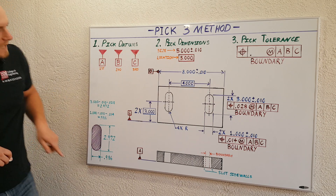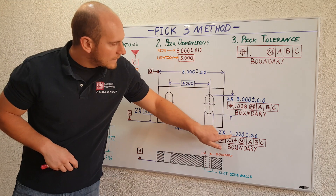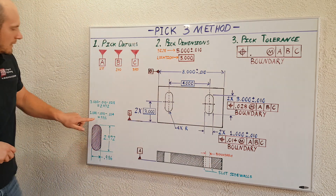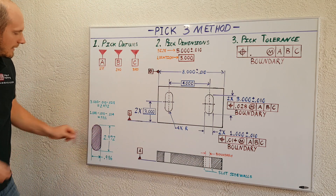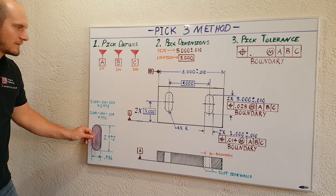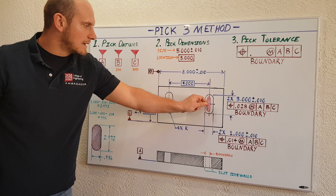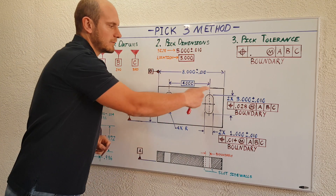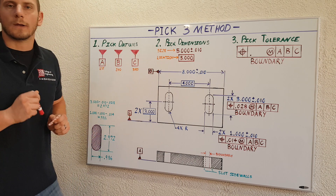Do the same thing for your overall width: 1 inch, minus 10 thousandths, minus 14 thousandths, which gets you 0.986. And that's the size of that internal boundary area that cannot be violated when that slot is being machined. And that's straight to the point.